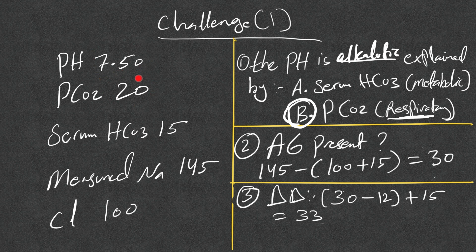The next thing: is an anion gap present? We always calculate the anion gap. The anion gap is 30, so there is an anion gap present. Immediately after that, we jump to the delta-delta. The delta-delta is: current anion gap (30) minus the normal anion gap (12), plus the measured serum bicarb — which gives us 33.